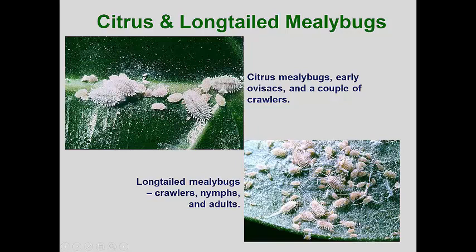The two most common mealybugs encountered in the greenhouse are the citrus and long-tailed mealybugs. Both can be found on a wide range of plants, but the long-tailed mealybug is most commonly found on ferns and woody herbaceous plants. The citrus mealybug is oval in outline in all stages and is generally covered with fine waxy powder. Along the lateral margins, short spikes of wax are evenly spaced. The long-tailed mealybug has slightly longer lateral waxy spikes, but the long tail-like waxy threads are diagnostic.